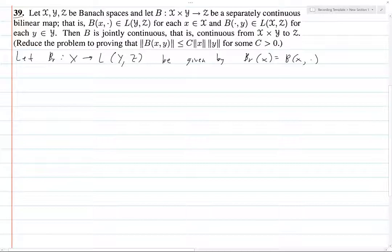for every fixed x, this gives us a function in y that maps into Z. So that's basically this thing here. Okay, let this be given by this, and B_l from Y to L(X,Z) by